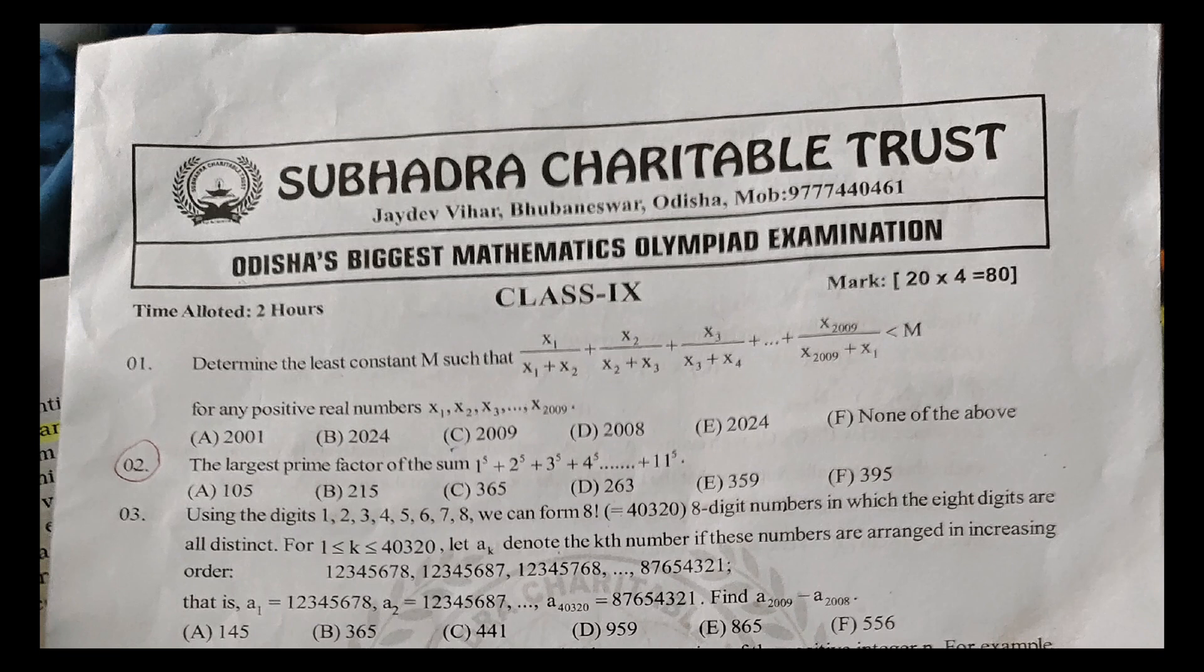The largest prime factor of the sum 1^5 + 2^5 + ... + 11^5. The answer is D, 263.